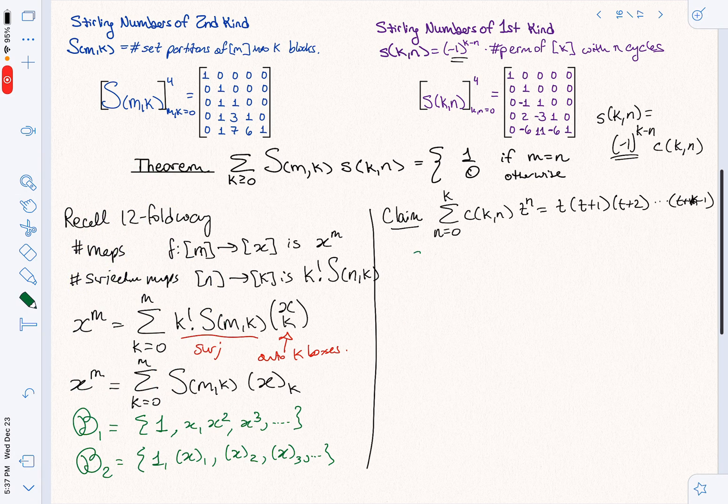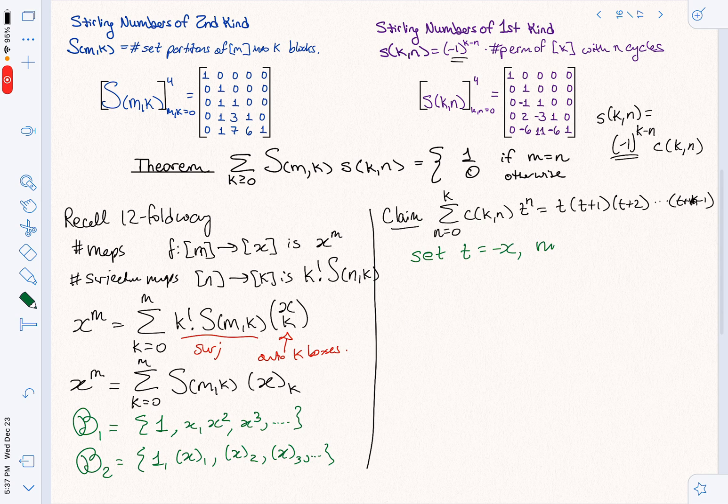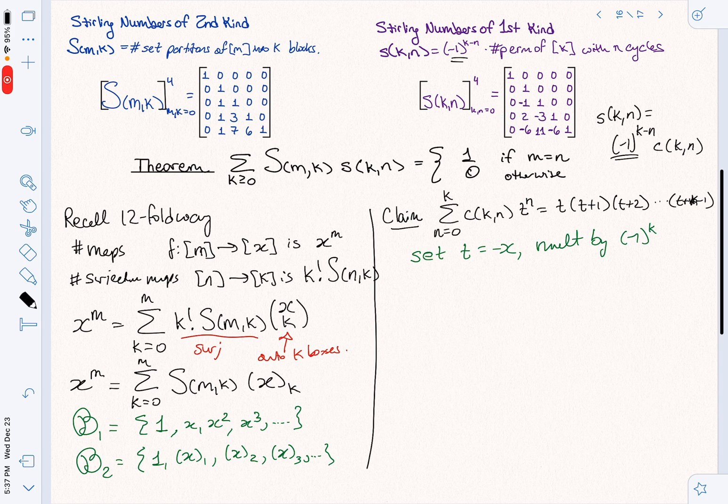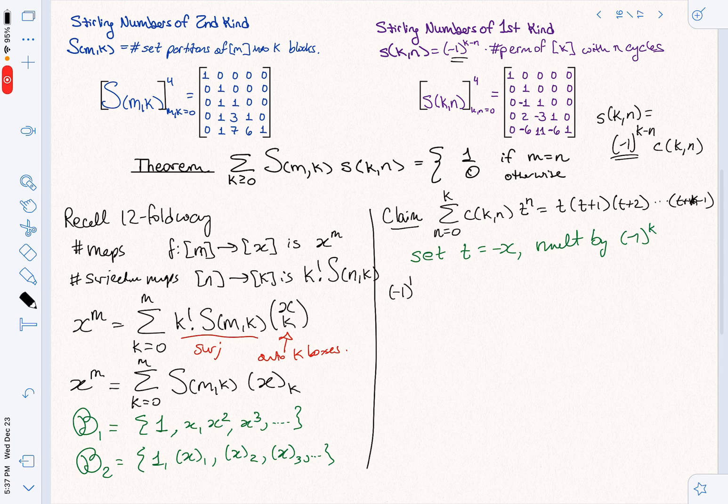And now what I want you to do is let's change our variables a little bit here. Let's set T equal to negative X and let's multiply this whole thing by minus 1 to the K. So I'm going to multiply by minus 1 to the K and I'm going to set T equal to negative X. And let's see what I get. I get minus 1 to the K, the sum from N equals 0 to K, c(K,N) minus X to the N is equal to minus X, minus X plus 1, all the way up to minus X plus K minus 1.